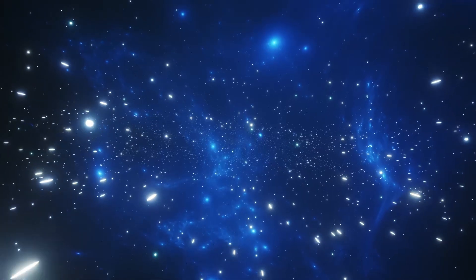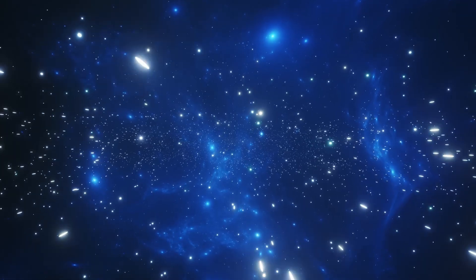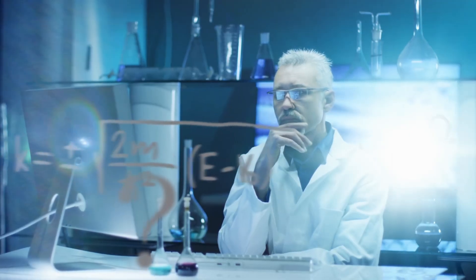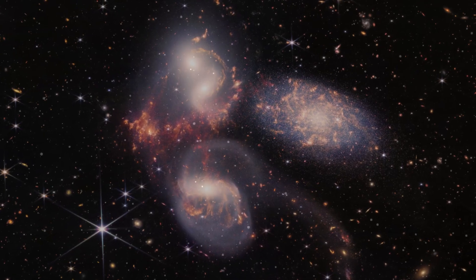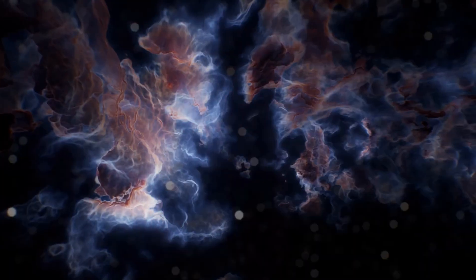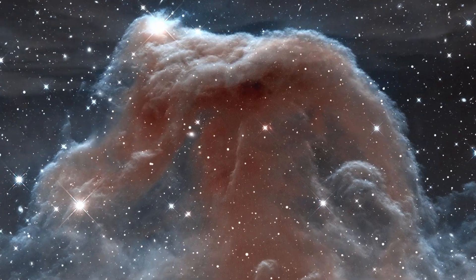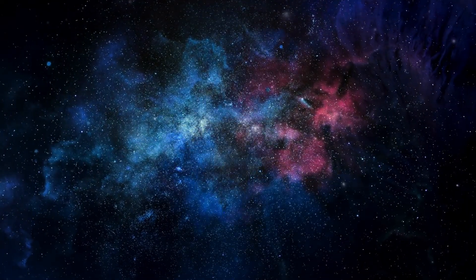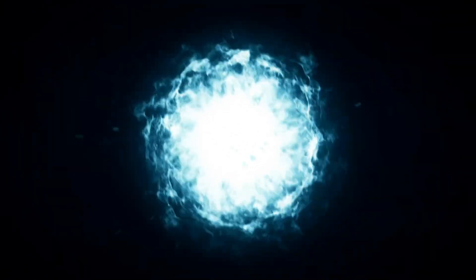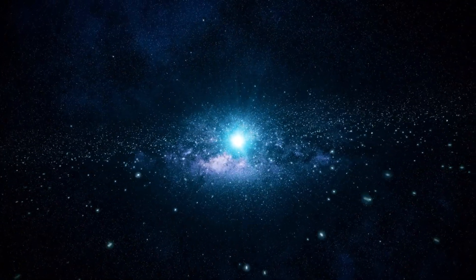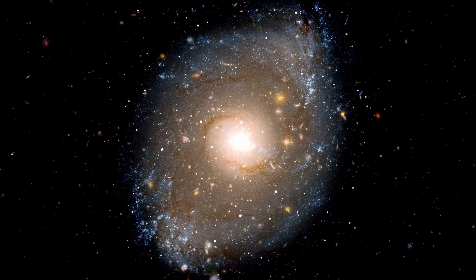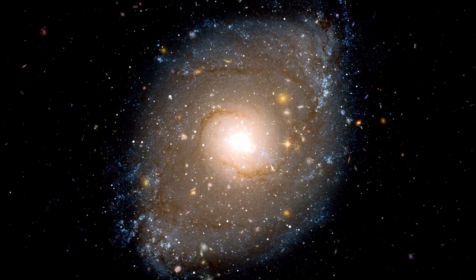How is this possible? Galaxies are supposed to form gradually: gas cooling into clouds, clouds collapsing into stars, stars clustering into shapes. The earliest formations should look messy, diffuse, chaotic. But Webb shows symmetry, density, complexity.